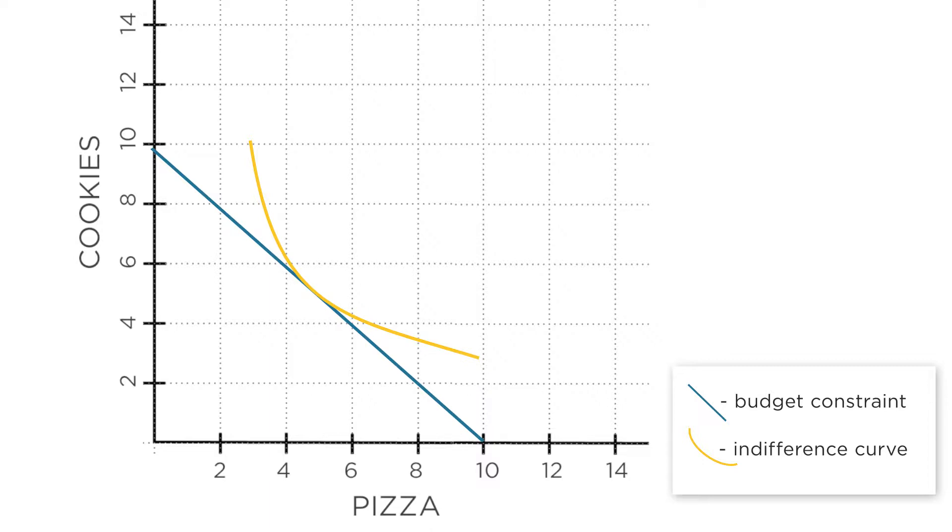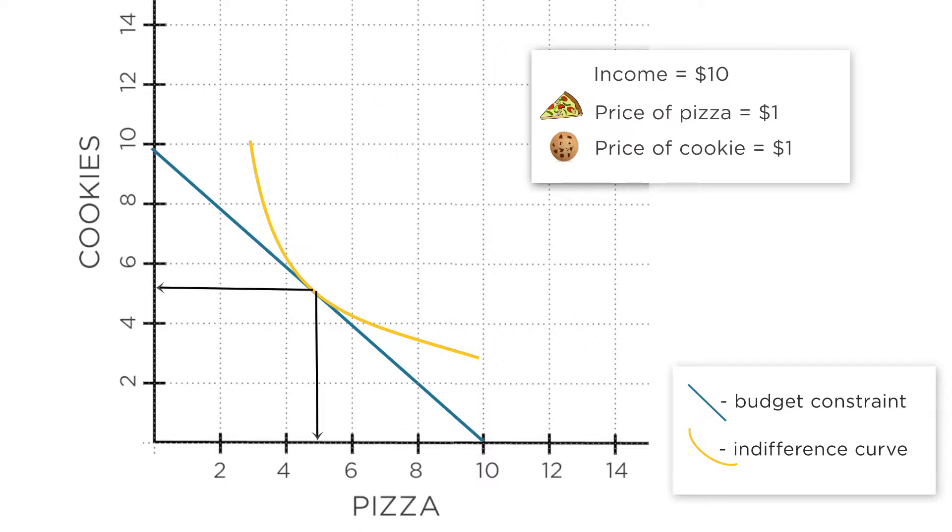Let's say your income is $10 and both goods cost $1 each. Let's say you're consuming five units of each good. So five slices of pizza on the horizontal axis and five cookies on the vertical axis put you right here at point A.